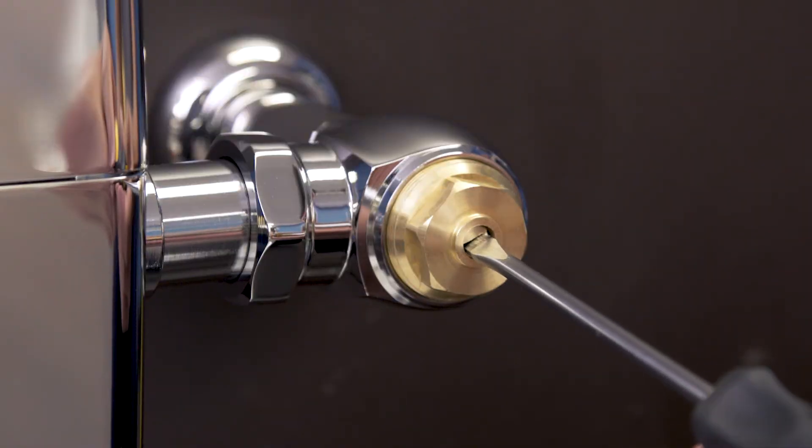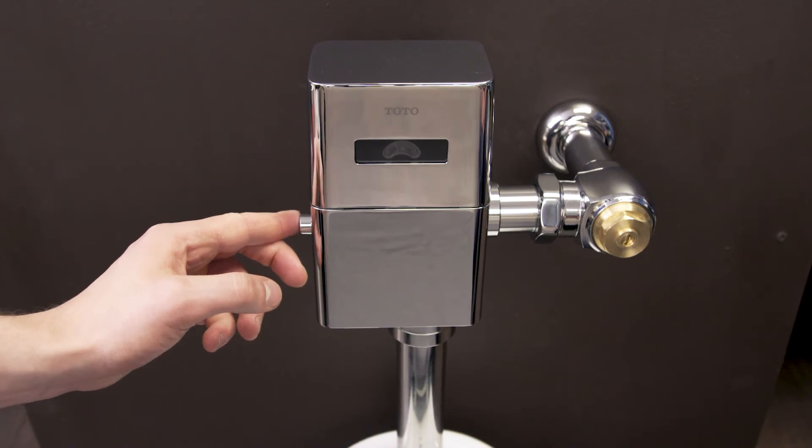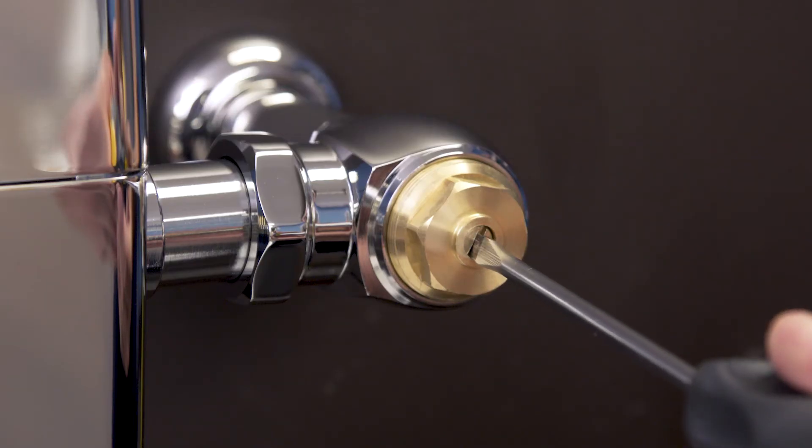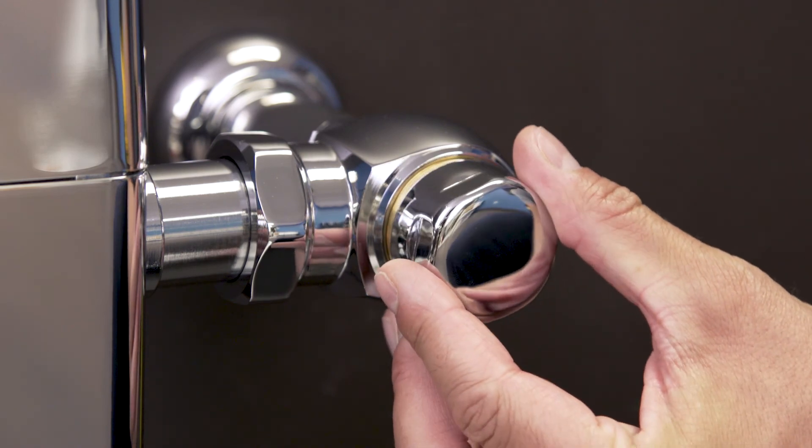Turn on the water by opening the control stop. Now test the flushometer and adjust the control stop until you get a normal flush with quiet operation. Finally, replace the cap.